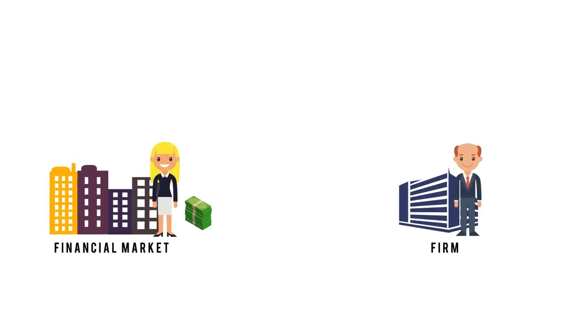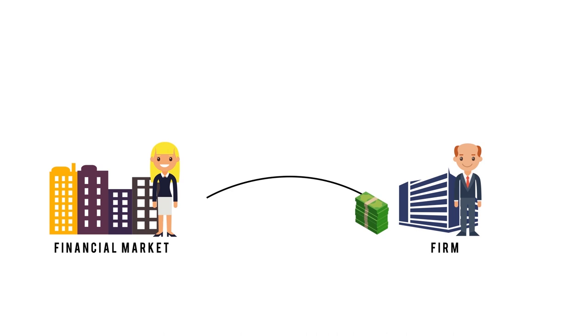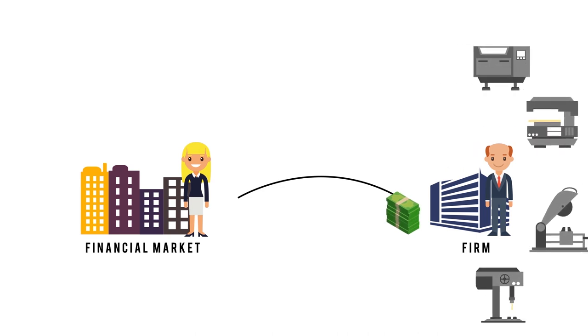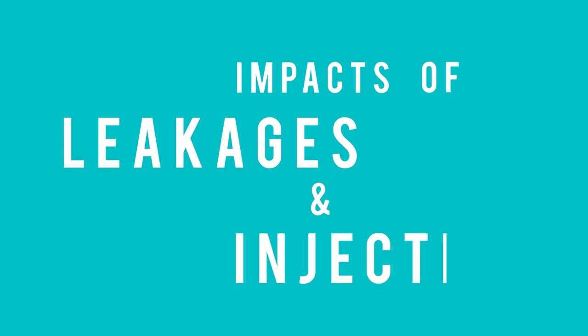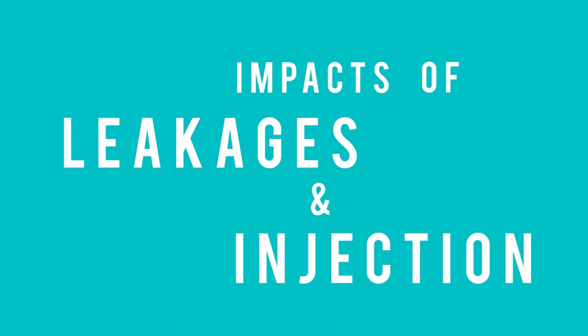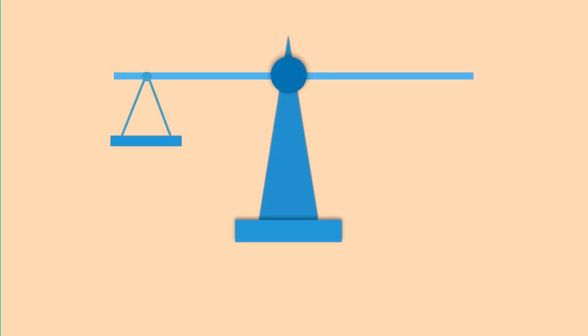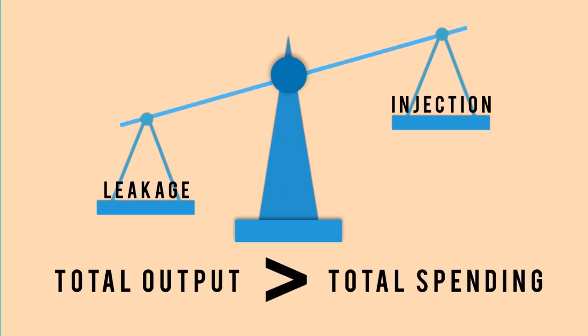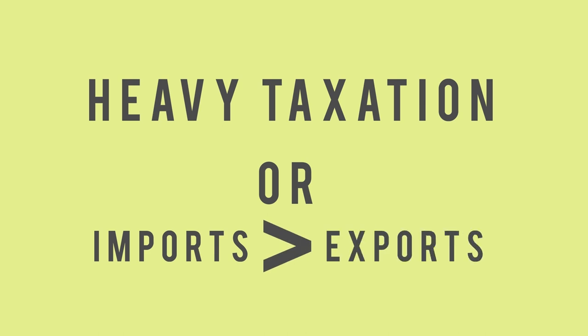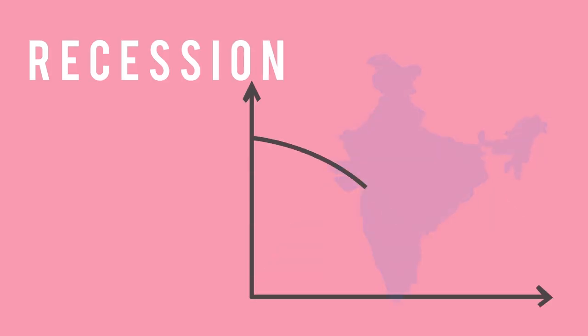Circular flow also helps us understand the interdependence of all sectors — they rely on each other and cannot fully operate without other sectors. For example, firms need the financial sector to borrow money for investment to buy capital goods and expand operations; similarly, financial markets need households to deposit savings which are then lent to firms. Finally, circular flow helps identify and study the impact of leakages and injections. When leakages exceed injections, total output exceeds total spending — this happens when households save more, due to heavy taxation, or when imports exceed exports — leading to recession or a fall in GDP.